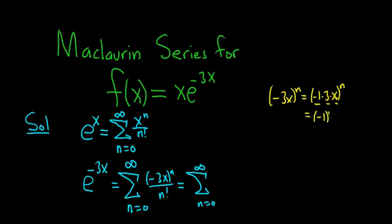(-1)^n, 3^n, x^n. So this is equal to (-1)^n times 3^n times x^n, and it's all over n factorial.